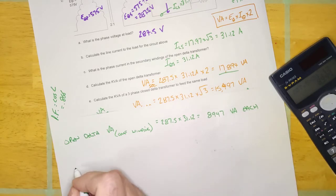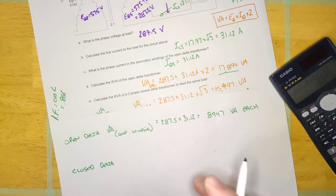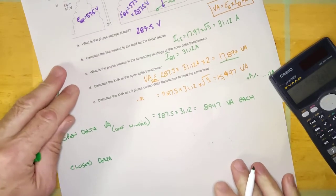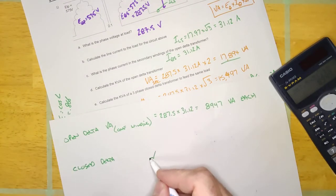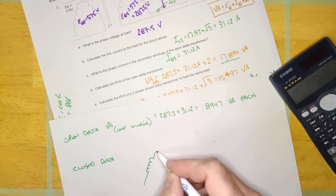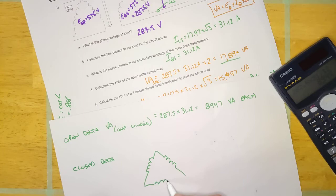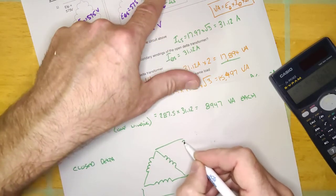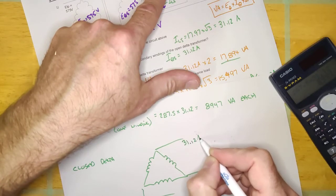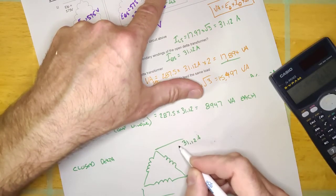Well imagine it was closed delta. Okay, then we know with closed delta it would look like this, right? There, that'd be the load. The line current would be the same, 31.12 amps. The line voltage would be the same, E line going to the load, 287.5 volts. And this would be I line.